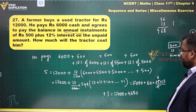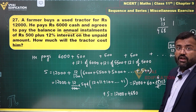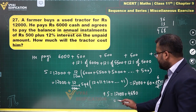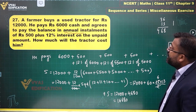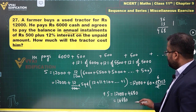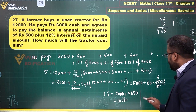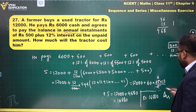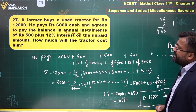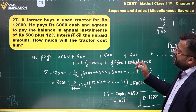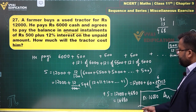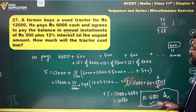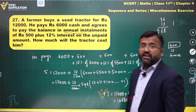So 4,680 is the extra amount he has paid. Total: 12,000 plus 4,680 equals rupees 16,680. That's the final answer — rupees 16,680 is the net amount he needs to pay for buying the tractor after paying 6,000 in cash and the balance in annual installments of 500 plus 12 percent interest. That's the final answer for question number 27.